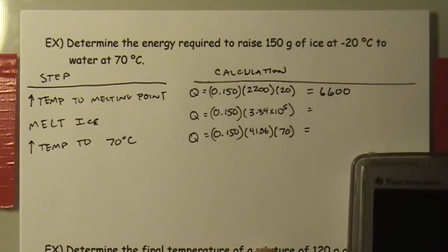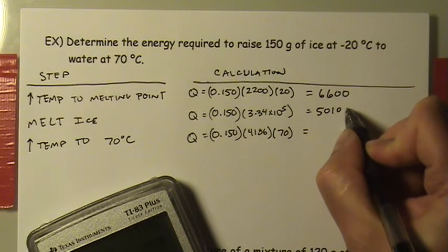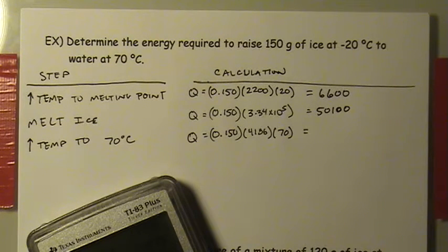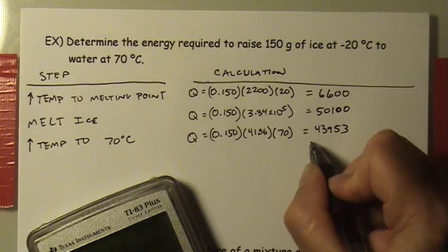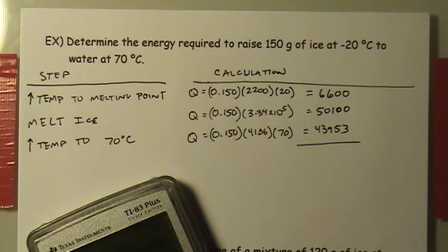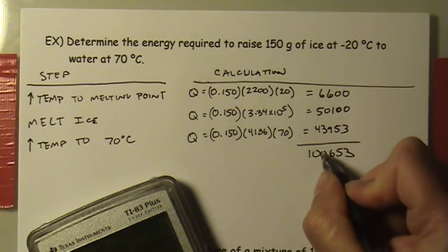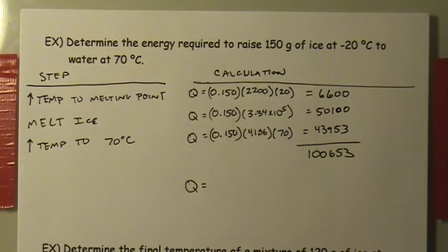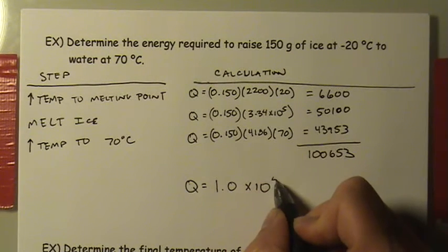The results: bringing the ice to melting point gives 6,600 joules. Melting the ice requires 50,100 joules. Raising the water to 70°C gives 43,953 joules. Adding all three together gives a total of 100,653 joules. Rounding to the correct number of significant figures, the total energy required is 1.0 × 10^5 joules.